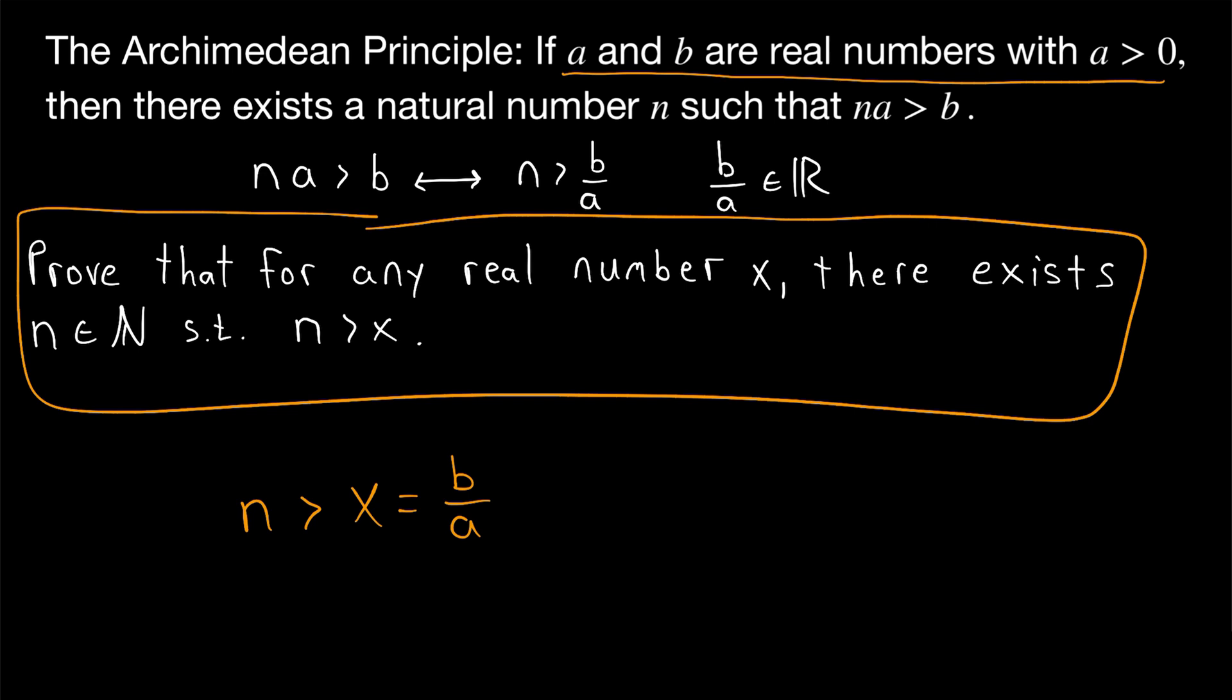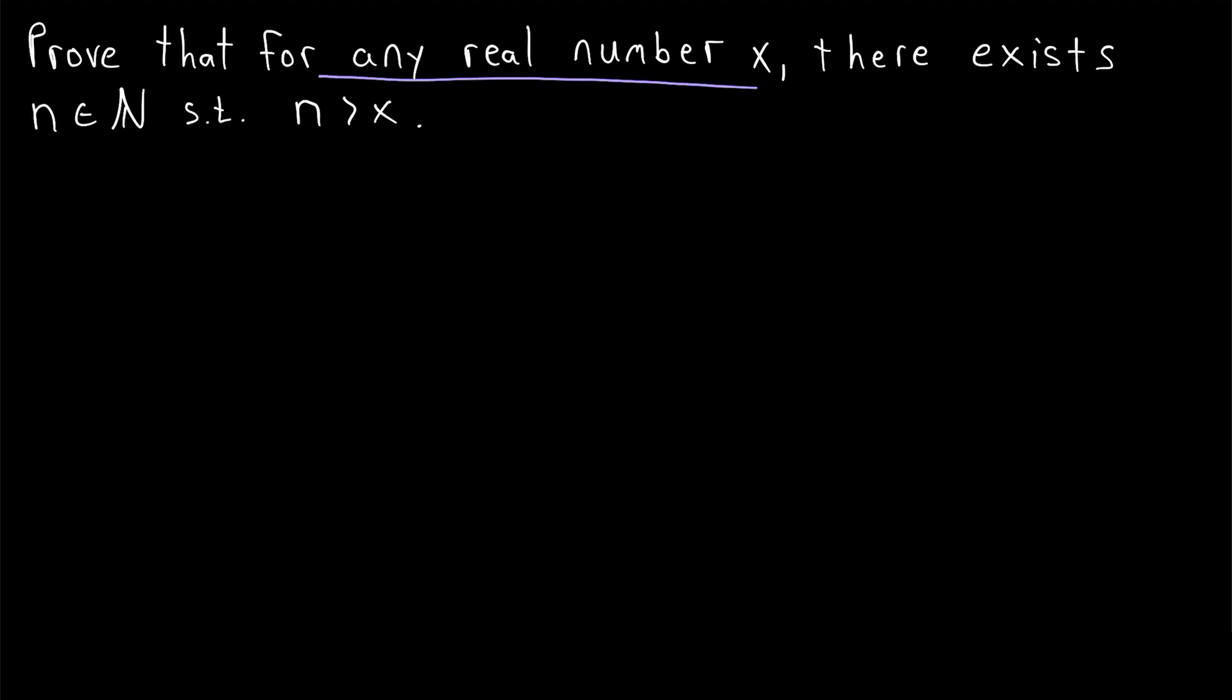Let's get right into the proof. And we'll proceed by contradiction. We want to prove that for every real number X, there exists some greater natural number. So we'll assume for contradiction that there's some real number for which this doesn't hold, a real number that's greater than or equal to every natural number. So we say, suppose for contradiction SFC, that there exists some real number X, such that X is greater than or equal to N for every natural number N. Thus, the set of natural numbers is bounded above.